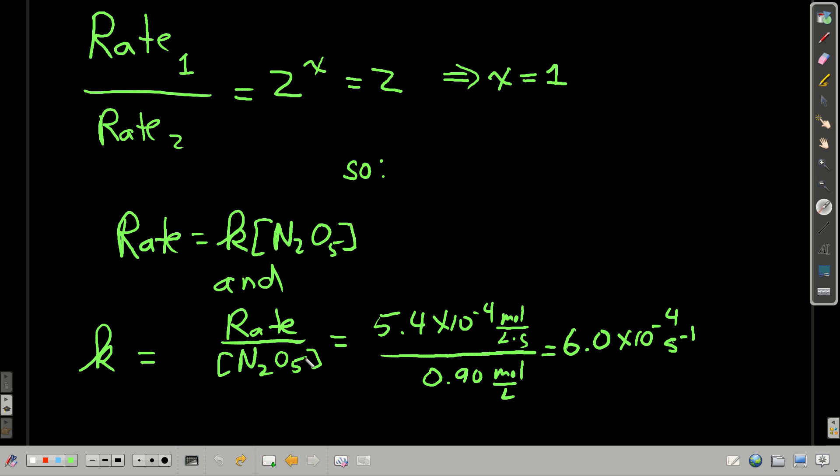Once we know that, we can use either one of those rates, either 2.7 or 5.4 times 10 to the minus 4th. Rearrange this a little bit, and we can get the rate constant K. So just do a little bit of algebra, solve for K, and you get the same result if you plug in 2.7 times 10 to the minus 4th over 0.45 moles per liter. And now we know it's 6 for this reaction, these conditions, 6.0 times 10 to the minus 4th per second, seconds minus 1.